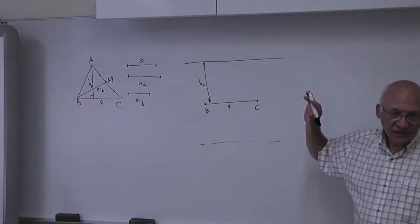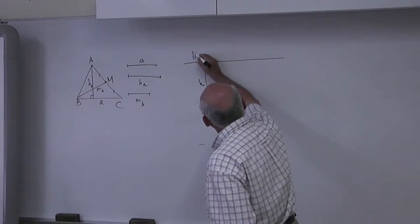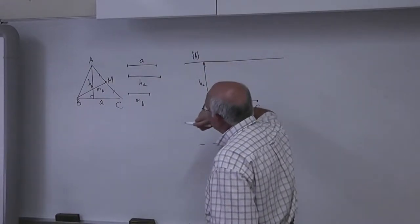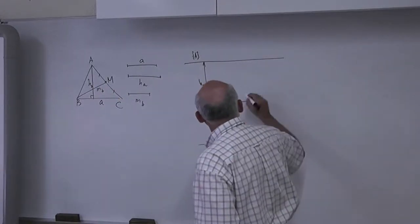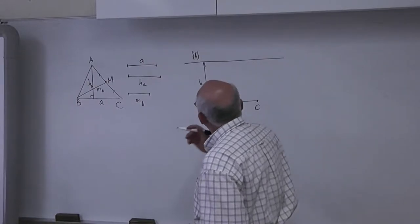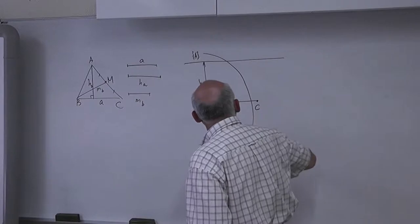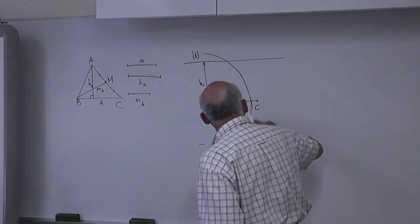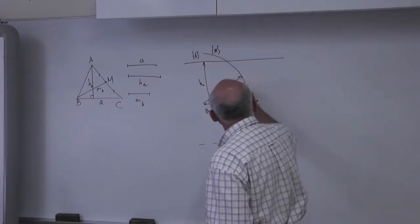Is this clear? Yes. So this is the locus of point A. And also we have this condition here. The locus of point M is the circle of radius MB.